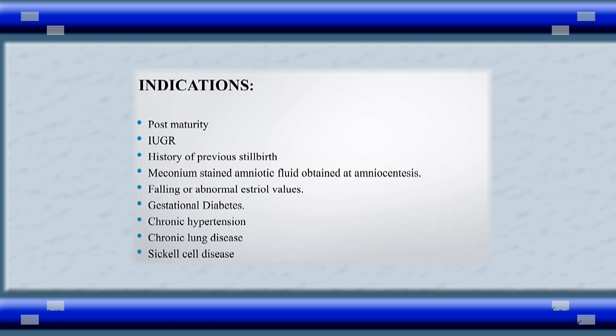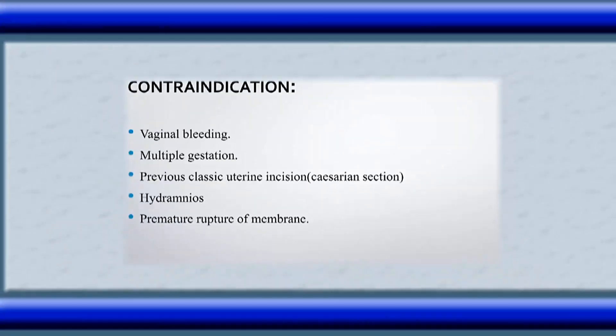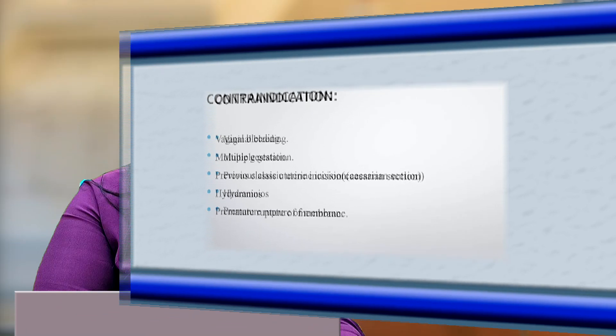The contraindications are: vaginal bleeding, multiple gestation, previous classic uterine incision — that means caesarean section — hydramnios, and premature rupture of membranes.